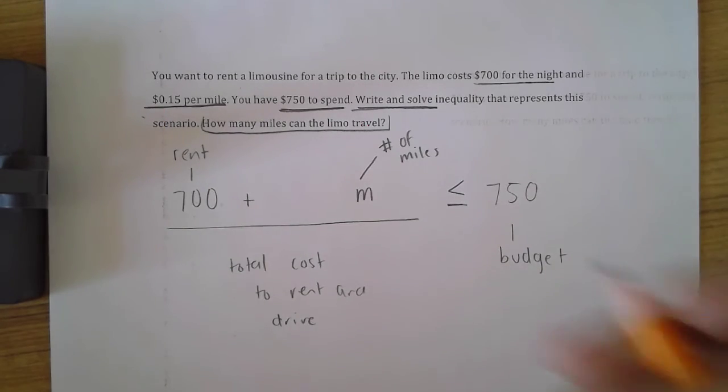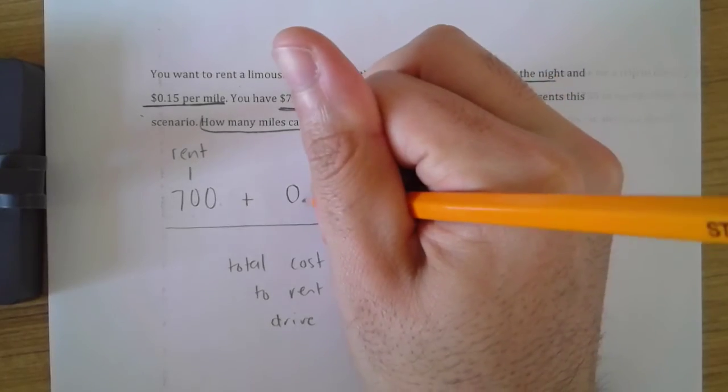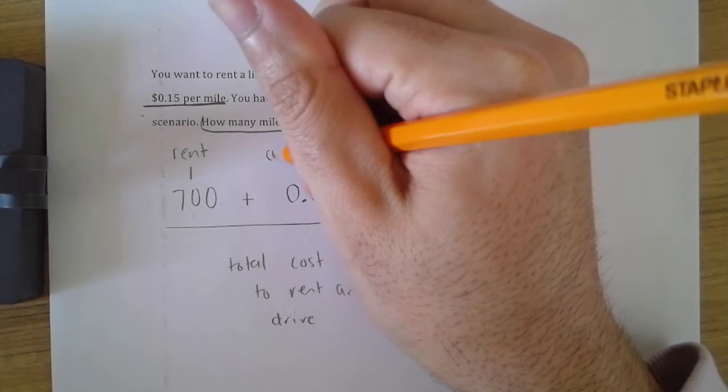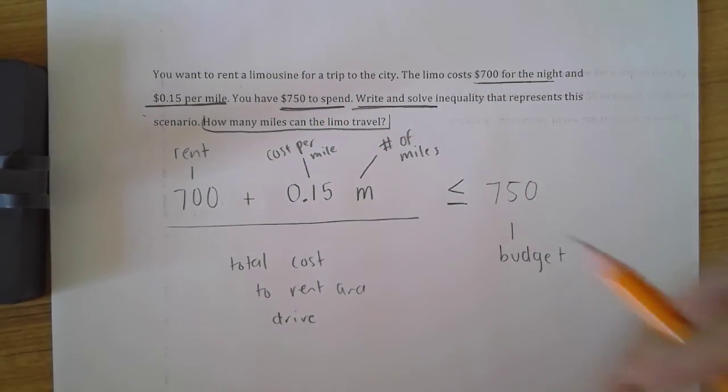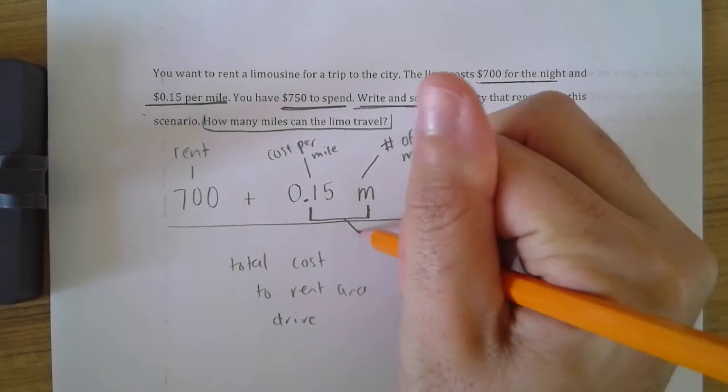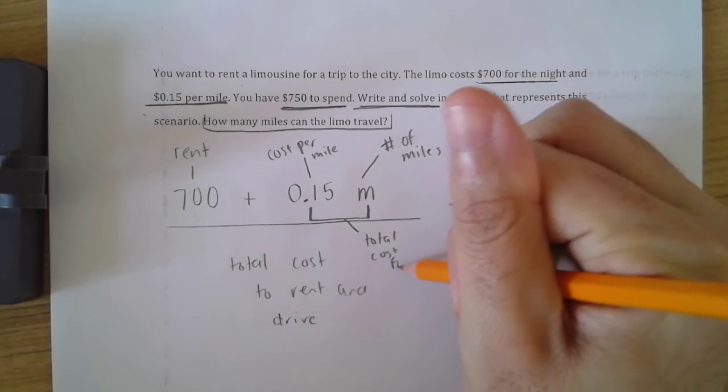It costs me 15 cents. So in fact, I need to use 0.15M where 0.15 represents the cost per mile and M represents the number of miles. Therefore, 0.15M is the total cost for mileage.